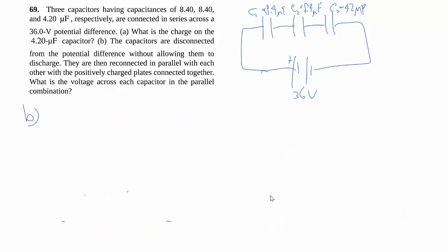And then for part B, somehow we disconnect the potential difference without letting them discharge. So whatever Q was on here before, we destroy all those. But the charges, which is what we figured out from part A, they're sticking around because the charges are unable to flow anywhere. There's no circuits.